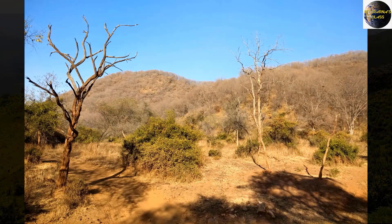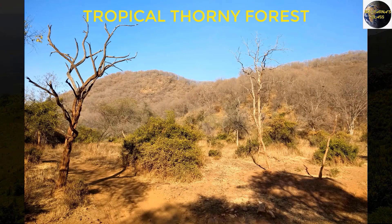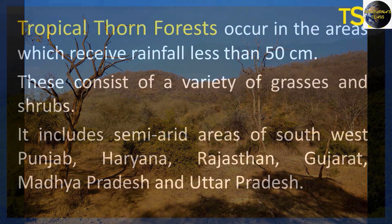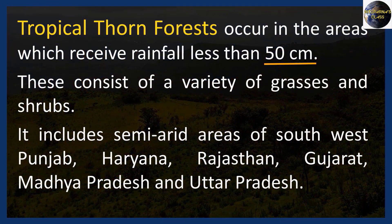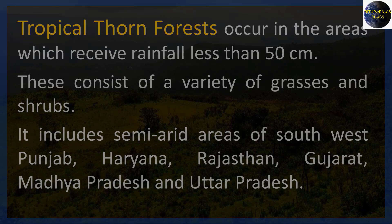Next is the thorny vegetation. Here you will find thorny shrubs and bushy trees, and even a few tall trees. This kind of vegetation occurs in areas that receive rainfall of less than 50 cm. The roots of the trees are long and most of the water is stored. Since rainfall is less than 50 cm, the place can also be called a semi-arid area.